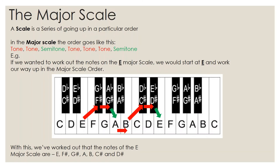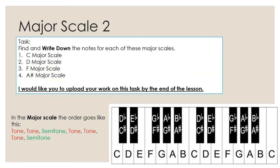You can work out any major scale starting from any note, and you can work out the tones and the semitones to make the major scale. So with that, this is your last task. I'd like you to find and write down the notes for each of these major scales: C major scale, D major scale, F major scale, and A sharp major scale, which is quite a difficult one. Once you've done that, make sure you upload your work. I've given you the order at the bottom left and the keyboard at the bottom right as well so you can work them out.